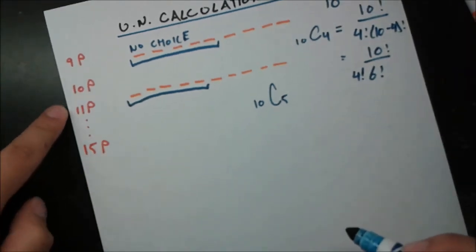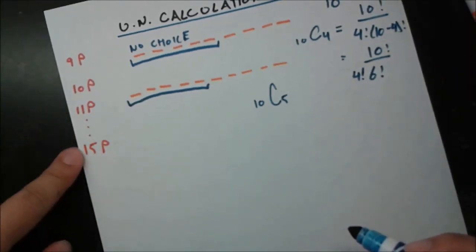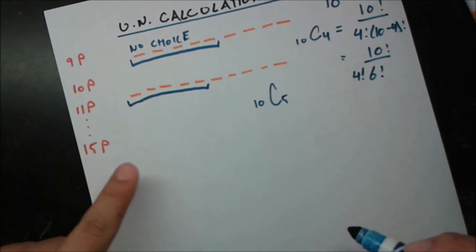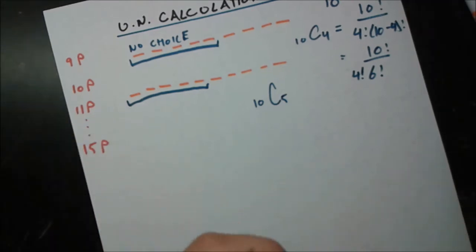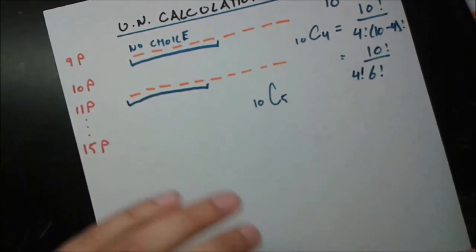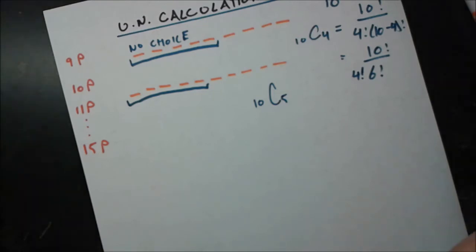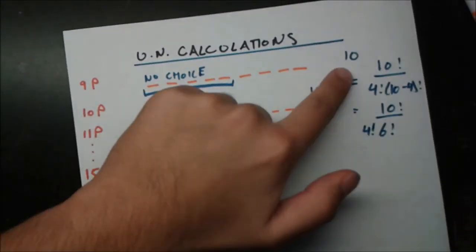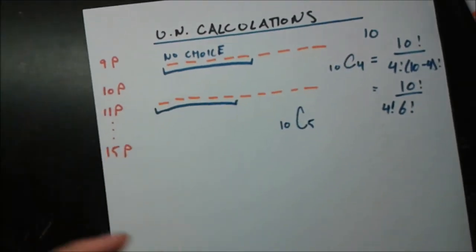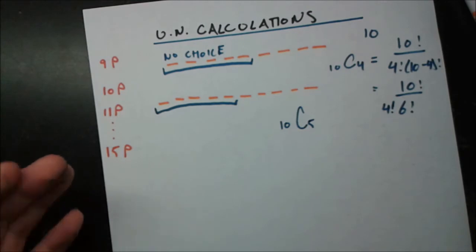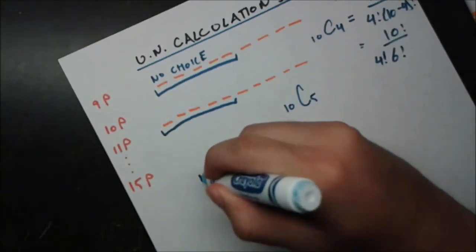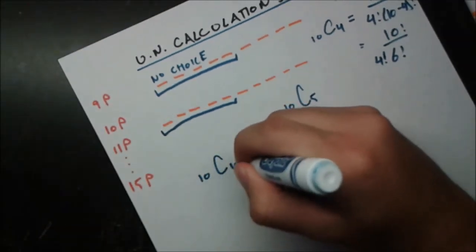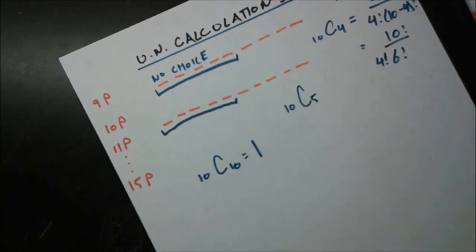The same logic applies for 11, 12, 13, 14, and 15 seats. In the 15-seat case, the first five seats are filled by the permanent nations with no choice, and the remaining 10 seats are filled by exactly those 10 non-permanent nations. So the number of choices for that last case is 10 choose 10, which equals just 1 — because that's everybody.